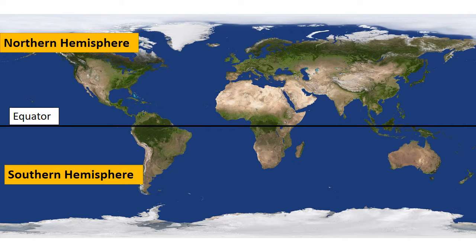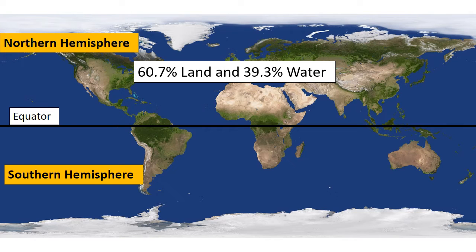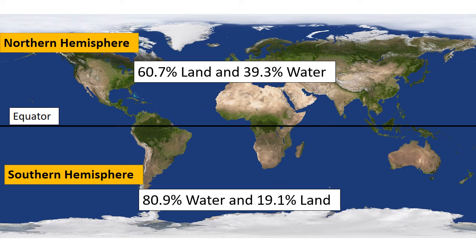Now let's talk about differences. The first difference is land and water percentage. As you can see in this map, the Northern Hemisphere has more land compared to the Southern Hemisphere — it has 60.7% land and 39.3% water. Because of this huge land along with water bodies, it plays a great impact on weather and climate patterns. On the other side, the Southern Hemisphere has less land and more water, with 80.9% water and 19.1% land.